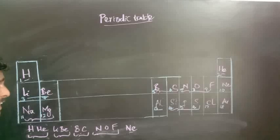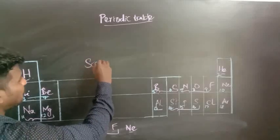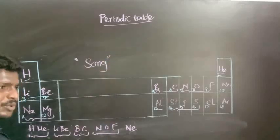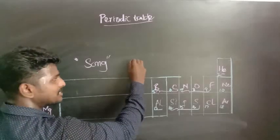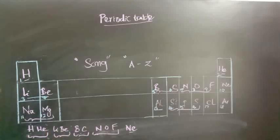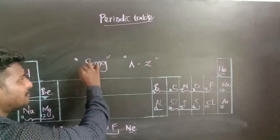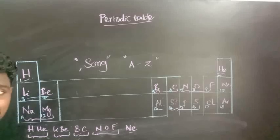Why do we need to take this as teams? We are going to use a song — the alphabetical song we used to learn from kindergarten. Our old teachers gave us that song to remember A to Z. By using that same alphabetical song rhythm, we are going to remember the first 18 elements of the periodic table.